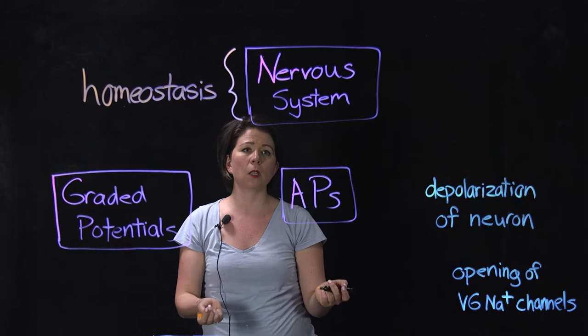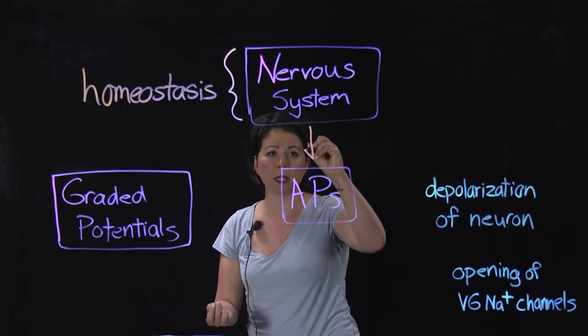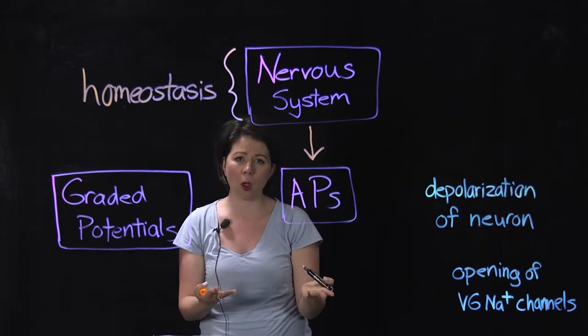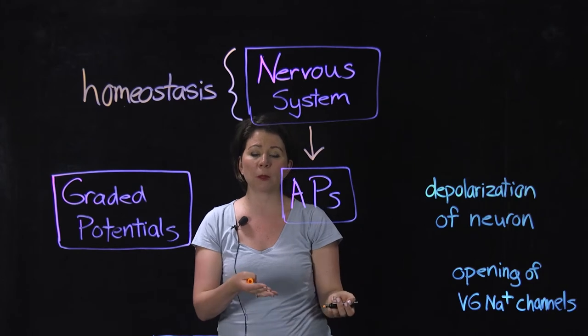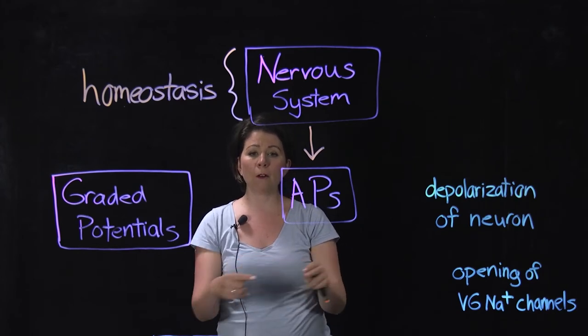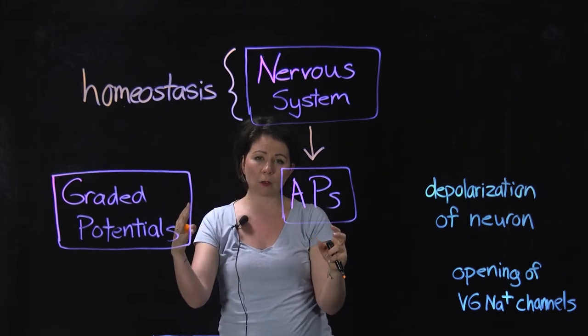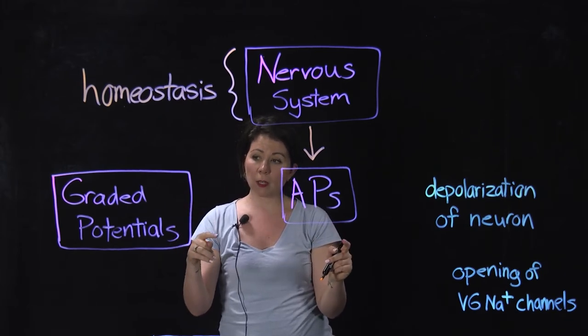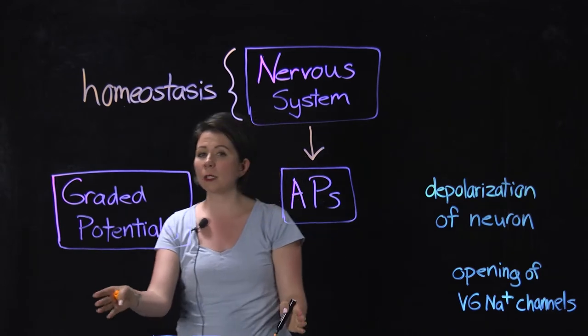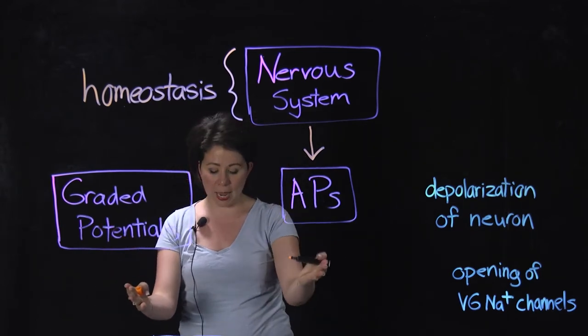So how does the nervous system do this? It does this through action potentials. We spent some time today talking about action potentials in terms of how they're propagated. We talked about the setup of the neuron in general.